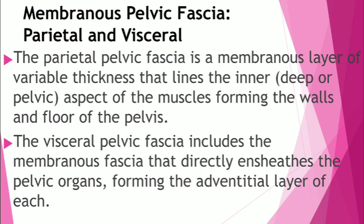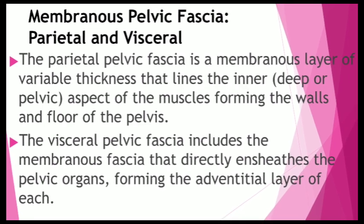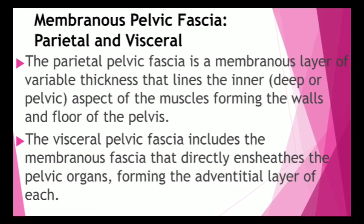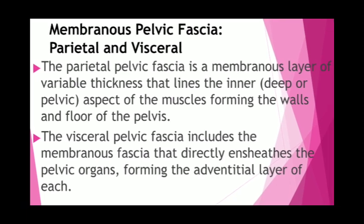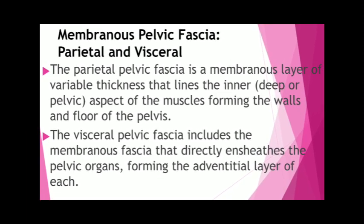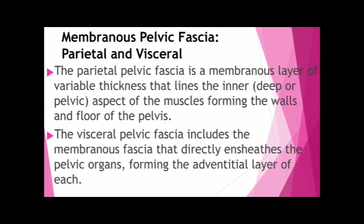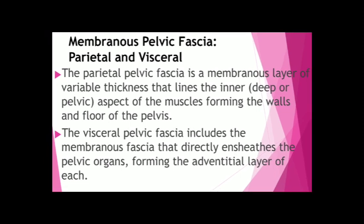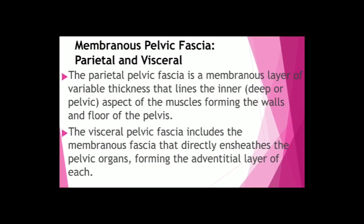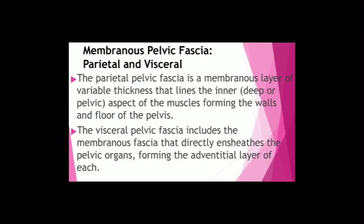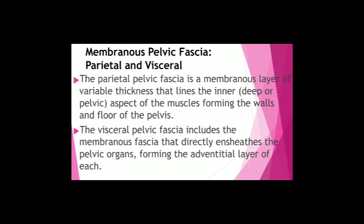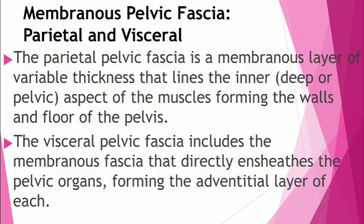For example, you have the obturator fascia — that part of the pelvic fascia that covers the obturator muscle. The parietal layer of the pelvic fascia is continuous superiorly with the transversalis and iliopsoas fascia found in the abdomen.